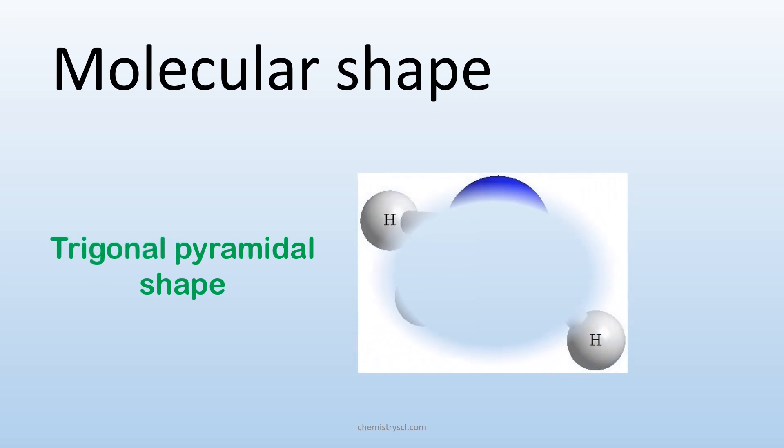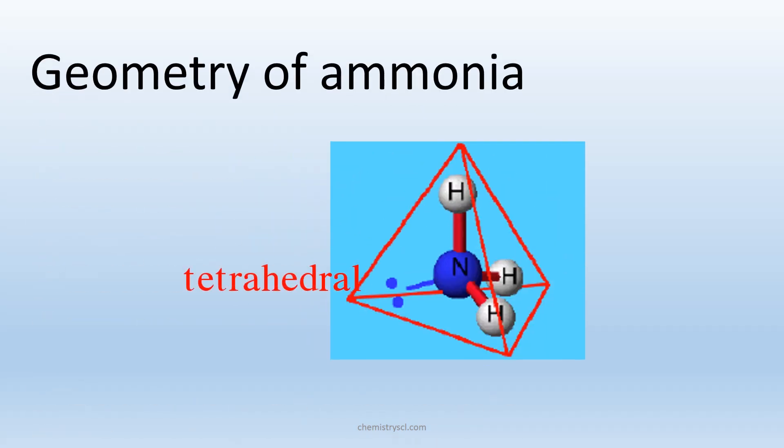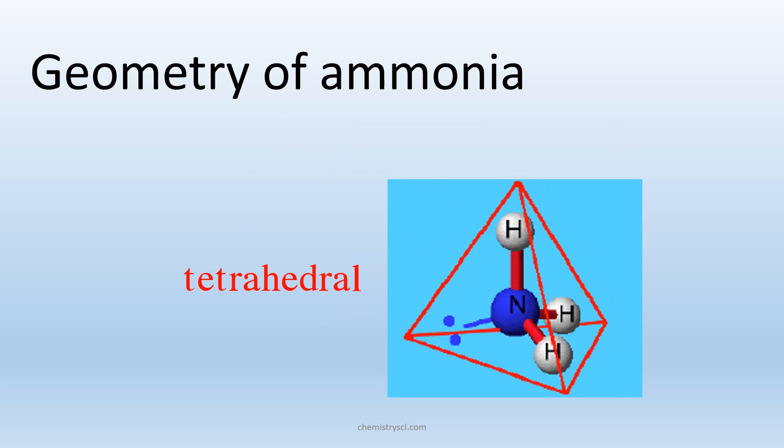Now let's see what is the molecular shape. The ammonia molecule has a trigonal pyramidal shape, and its geometry is tetrahedral.